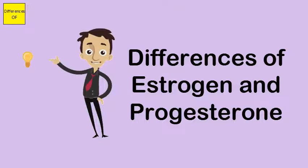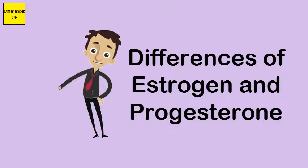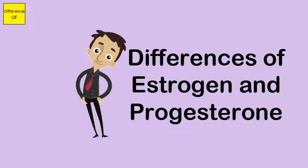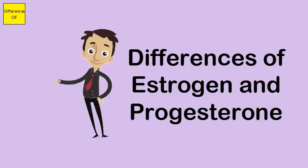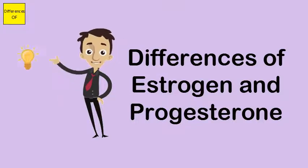Estrogen secretion is largely controlled by FSH, while progesterone secretion is largely controlled by LH.